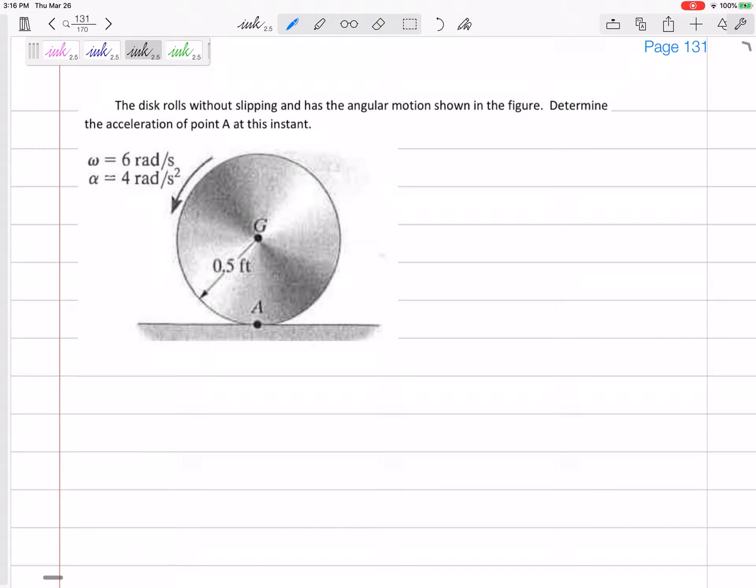It's not pure rotation. This one is rolling without slipping. So the omega equals 6 rad/s, the alpha equals 4 rad/s², and we want to determine the acceleration of point A. So what is the acceleration of point A?